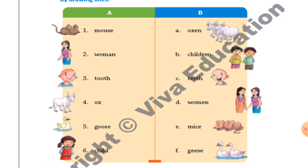First one: 'mouse' is a singular noun and the plural form of mouse is 'mice', M-I-C-E. Second one: 'woman', W-O-M-A-N, means ladies. The plural form of woman is 'women', W-O-M-E-N. Third one is 'tooth' — tooth means a tooth.